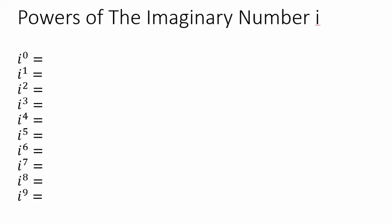In this video, we're going to look at taking the imaginary number i to different powers. Let's recall what the imaginary number i represents — it's defined as the square root of negative 1. As a consequence of that, if we square both sides, we end up with the important fact that i squared is equivalent to negative 1.